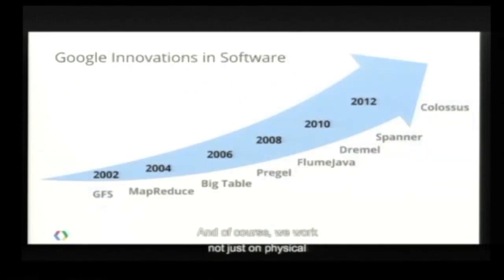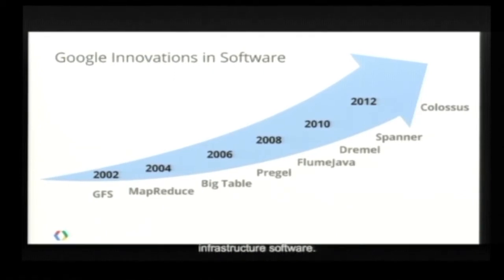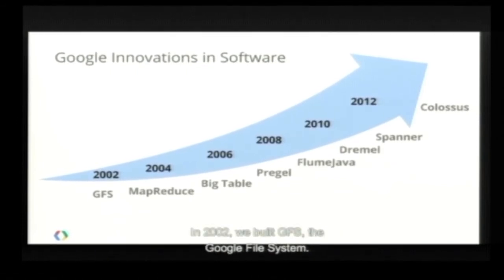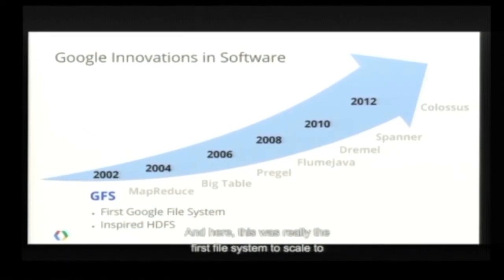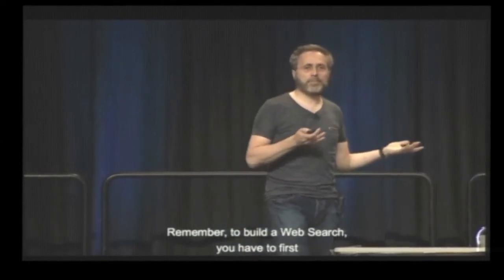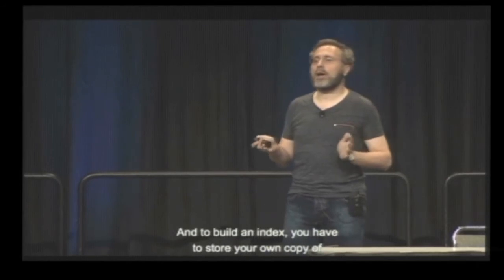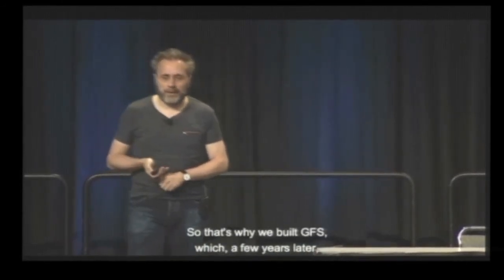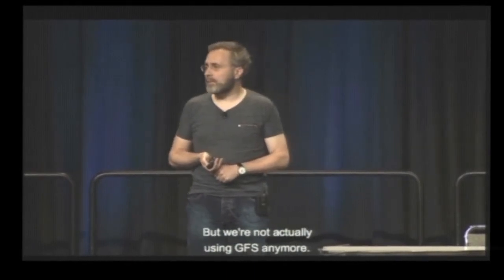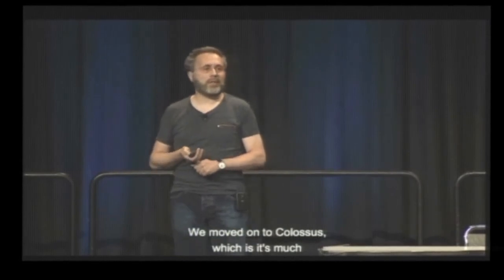We work not just on physical infrastructure but also on software infrastructure. In 2002, we built GFS — the Google File System — which was really the first file system to scale to data center size. We had to build it because no existing file system could handle our workload. To build web search you have to build an index, and to build an index you have to store your own copy of the web. GFS inspired the Hadoop Distributed File System (HDFS). But we're not using GFS anymore — we moved on to Colossus, its much more capable successor.